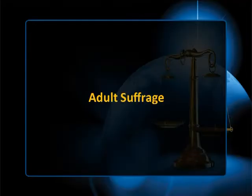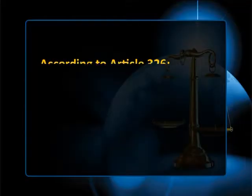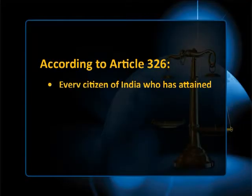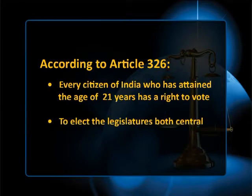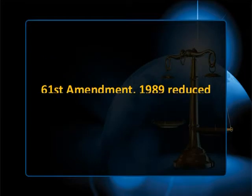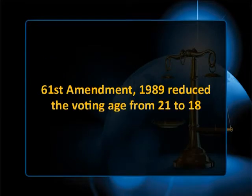We have another fundamental feature of the Constitution — the salient feature of adult suffrage. The framers of the Indian Constitution incorporated the system of uniform adult suffrage. According to Article 326, every citizen of India who has attained the age of 21 years has a right to cast a vote to elect the legislature, both at the central and the state level.